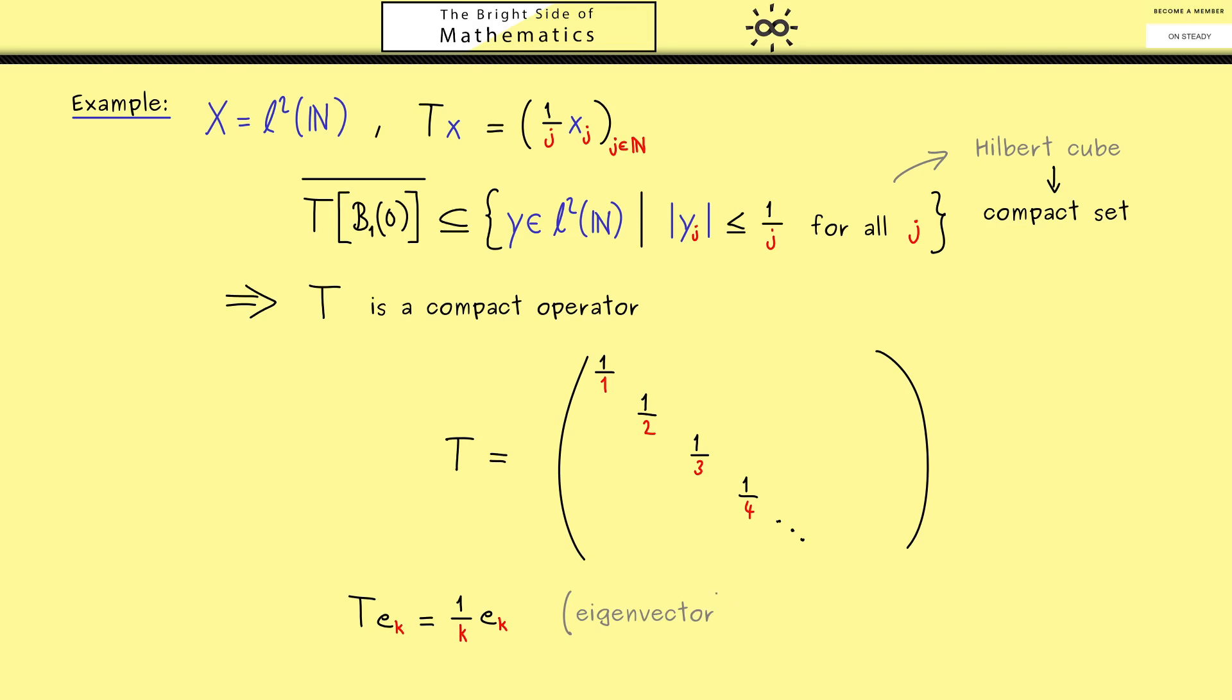Moreover we also see that the eigenspace should be one dimensional. Of course from before we know it should be finite dimensional, but here we see it's also one dimensional.